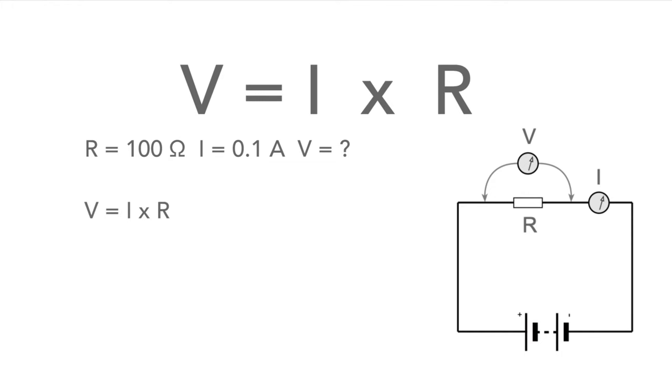Let's put the values into the equation. We can see that the voltage equals I, which is 0.1 amps, or 100 milliamps, times the resistance, which we know is 100 ohms. Voltage equals 0.1 times 100 equals 10. 10 volts.